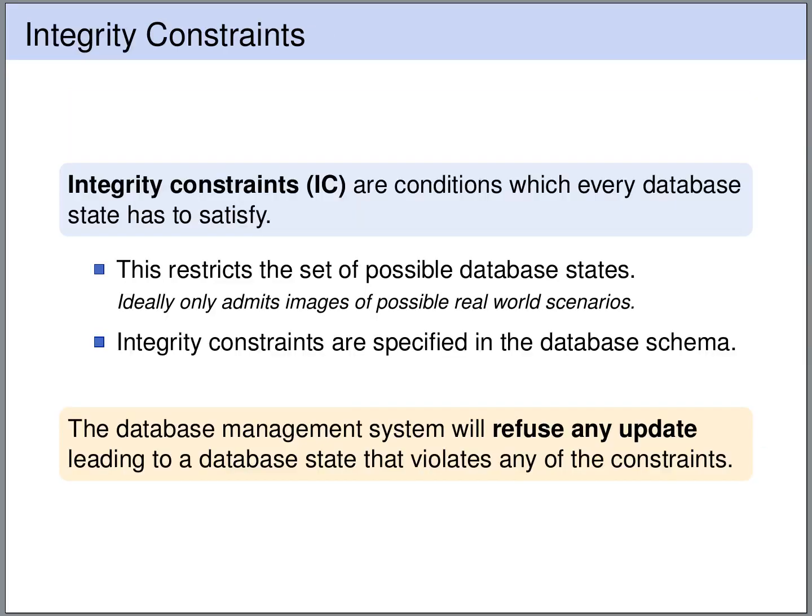So we want to express so-called integrity constraints. These are conditions that every database state has to satisfy. These integrity constraints restrict the set of possible database states, and ideally we want every possible state to represent a real-world scenario. The integrity constraints are specified as part of the database schema, and the database management system will refuse any update or change that leads to a state that violates one of the integrity constraints.